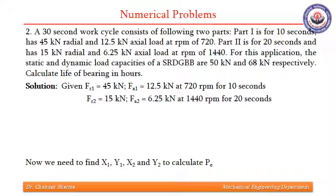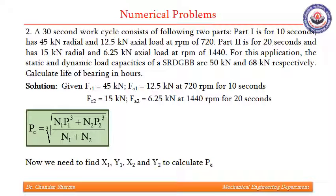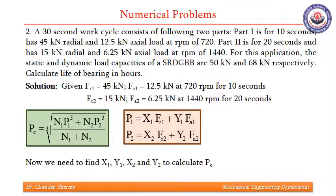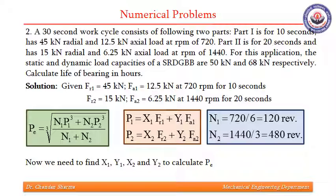Coming to the next question — this question pertains to cyclic loads where we have been given two loads for two different time periods: one for 10 seconds and another for 20 seconds, and then they get repeated. We need to find what would be the life of the bearing in hours. We use the cubic mean load formula, where P1 and P2 are given by X1·Fr1 + Y1·Fa1 and X2·Fr2 + Y2·Fa2, and n1 and n2 are the number of revolutions.